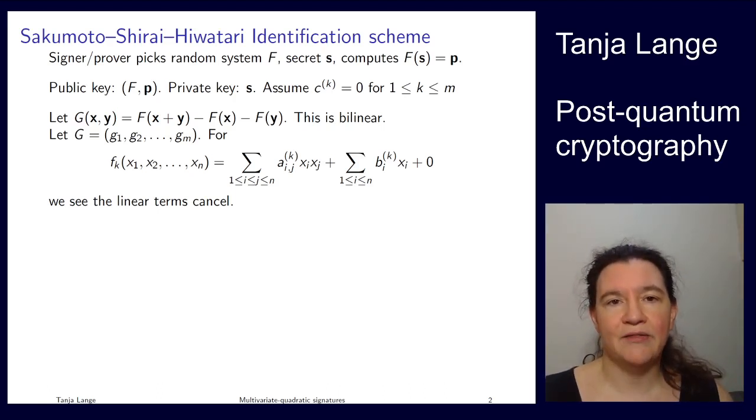Now in this case, the Sakamoto-Shirai-Hiwatari identification scheme uses multivariate system of equations. We have the random system of equations F, living over some finite field GF(q) with m elements. The secret is a vector s of length n over this finite field. The public key consists of the system of equations F, so m equations and n variables, and the output p, which is the evaluation of F at the secret s. The private key is just s.